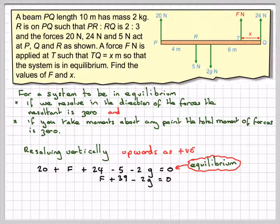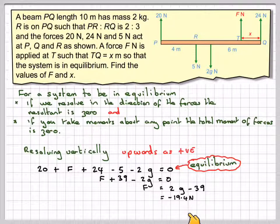Then that gives me F: 20 plus 24 minus 5 gives me 39. So we'll get F plus 39 minus 2G is equal to 0. F will be 2G minus 39 which gives me minus 19.4N.